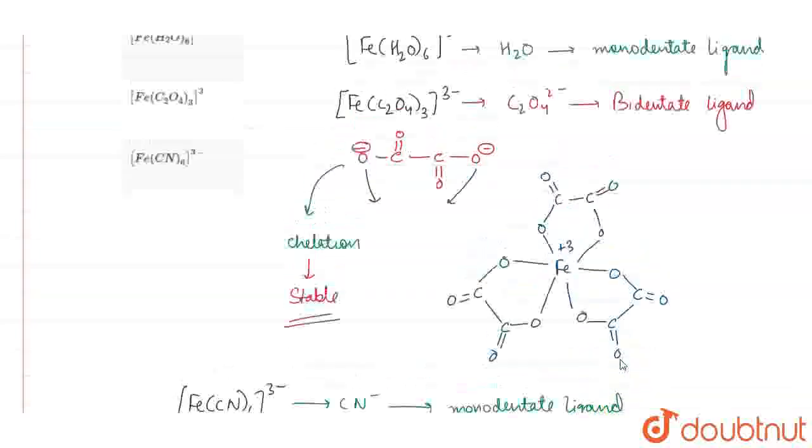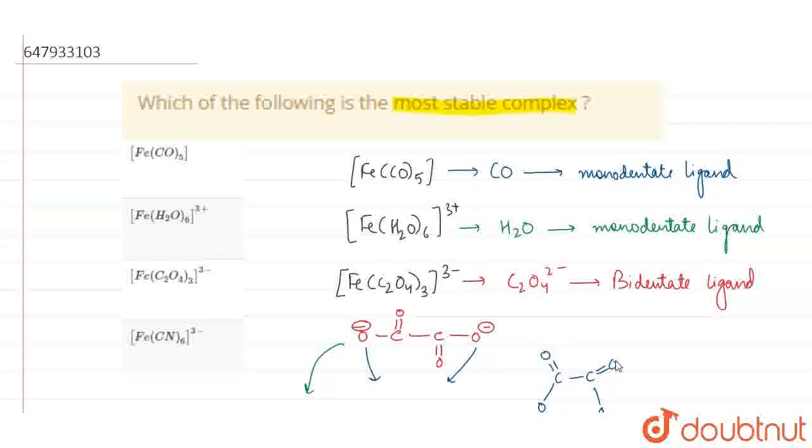In these four options, we have only one option with a bidentate ligand that forms chelation. So, the correct option is option C, Fe(C2O4)3^3-. Thank you.